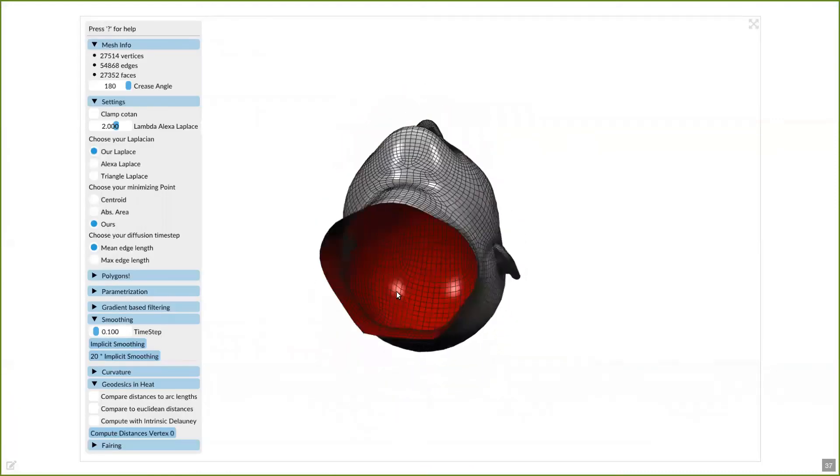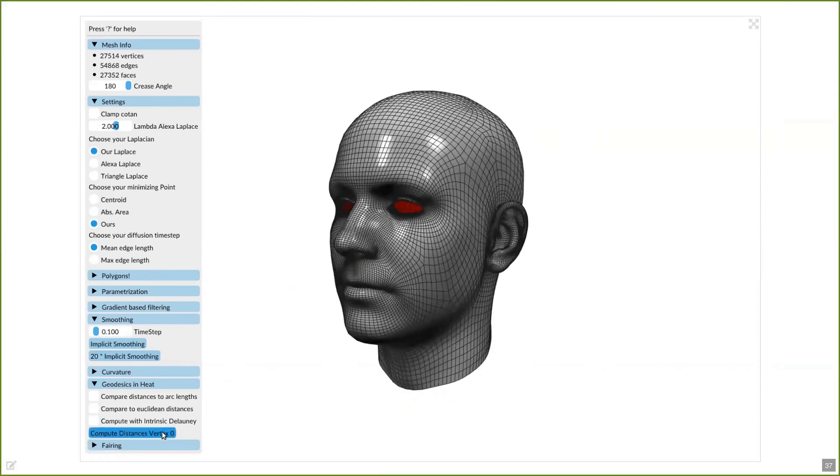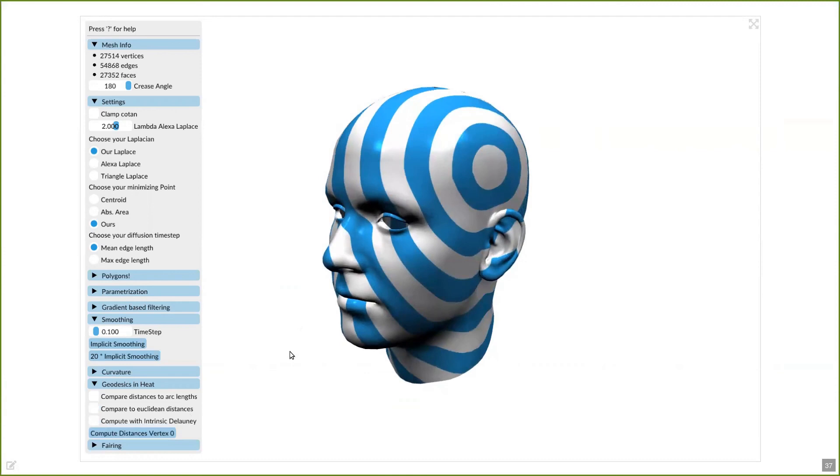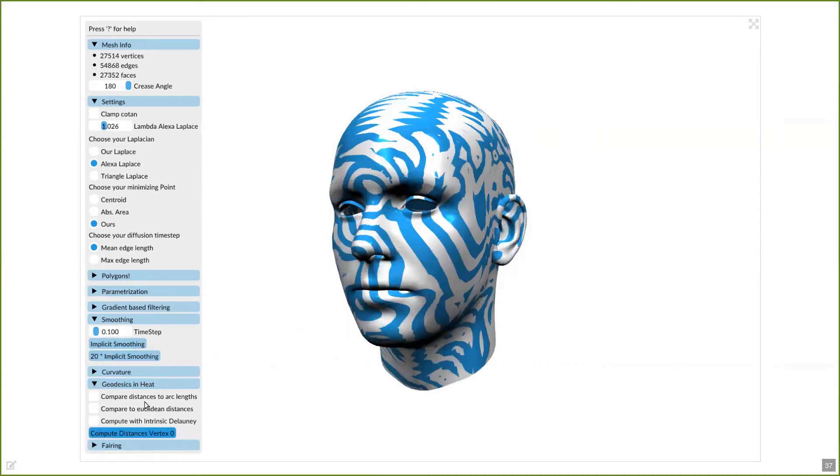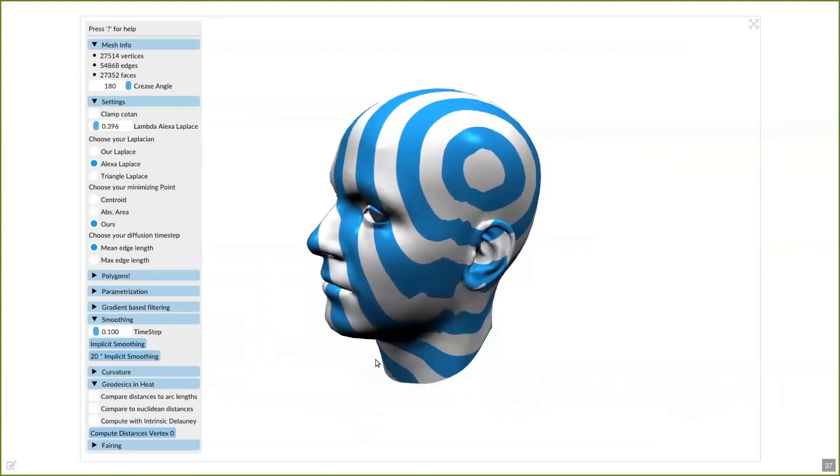Right now, we see a quad mesh forming a head. And if I compute the geodesic distances for the zeroth vertex with our operator, you can see that the results are very nice. If I now do the same for Alexa's operator with their recommended hyperparameter being 2, the results are clearly distorted. I can now adjust the hyperparameter to different values and obtain different results. And for this specific mesh, choosing a parameter around 0.3 gives generally the best results, although they are still a little bit distorted.